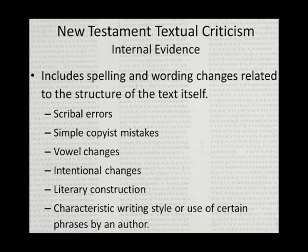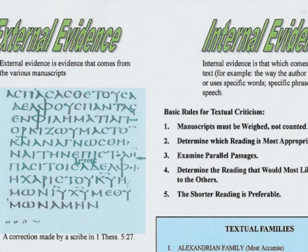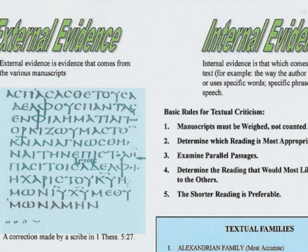Here's a good example of a correction a scribe made — as he was copying, he put a correction in the text itself. The textual critic has to determine: is that part of the original, or is it a textual note added later? That's why they compare all the manuscripts to come to a conclusion.